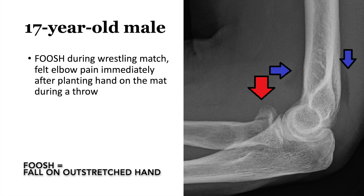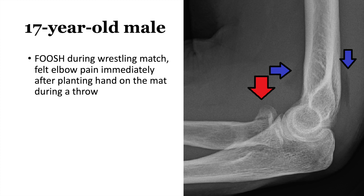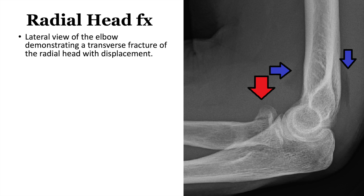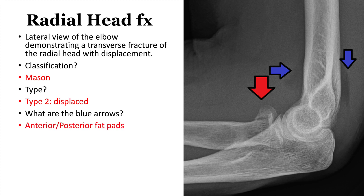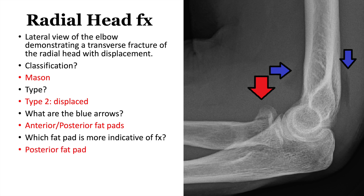Next: 17-year-old male, fall on outstretched hand during a wrestling match. This is a lateral view of the elbow demonstrating a transverse fracture of the radial head with displacement. The classification is the Mason classification. This is a Mason type two because it's displaced — type one is non-displaced, and you're looking for greater than two millimeters of displacement. Bonus: the blue arrows indicate anterior and posterior fat pads. The posterior fat pad is more indicative of an occult fracture. The anterior fat pad elevation is called the sail sign.